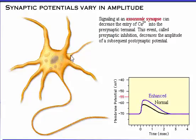Signaling at an axoaxonic synapse can decrease the entry of calcium into the presynaptic terminal. This event, called presynaptic inhibition, decreases the amplitude of a subsequent postsynaptic potential.